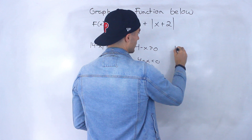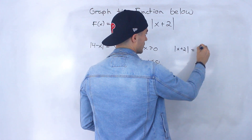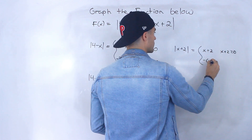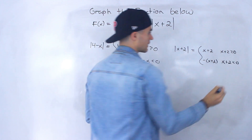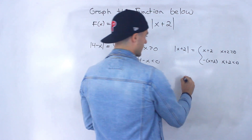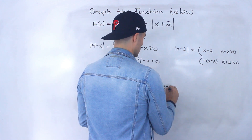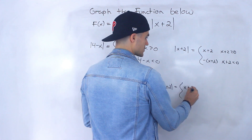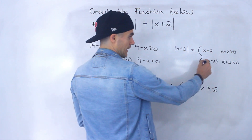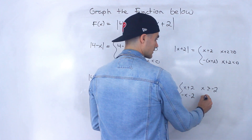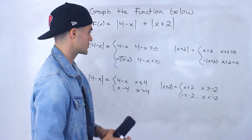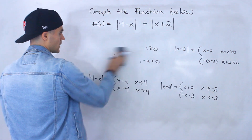Now I'll do the same thing with the absolute value of x plus 2. This becomes x plus 2 when x plus 2 is greater than or equal to 0, and negative bracket x plus 2 when x plus 2 is negative — we multiply by negative 1. Simplifying: x plus 2 when x is greater than or equal to negative 2, and negative x minus 2 when x is less than negative 2.